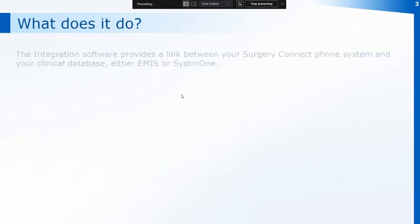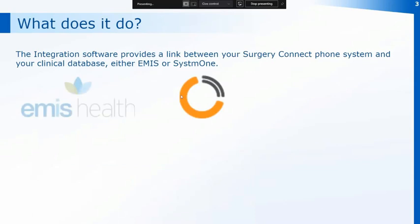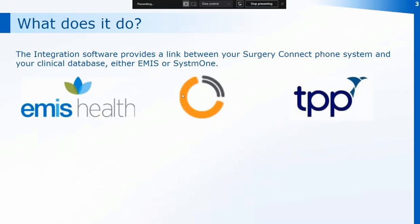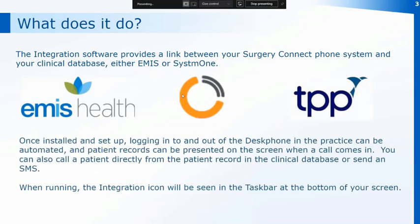The integration software provides a link between your SurgeryConnect phone system and your clinical database, whether that's EMIS or System 1. Once it's installed and set up, logging in and out of the desk phones within the practice can be automated. A patient record can be presented with inbound calls, and you can also call a patient directly from the patient record in the clinical database, or send them a text. Text templates can be set up through the integration section in the configuration console.